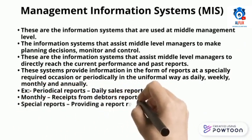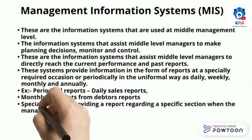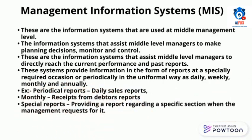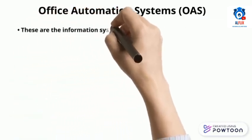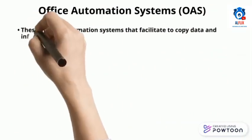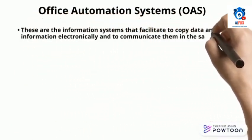Management information systems provide information in the form of reports, either at a specially required occasion or periodically in a uniform way — daily, weekly, monthly, and annually. Examples of periodical reports include a daily sales report or monthly receivables report. Special reports would be providing a report regarding a specific section upon management request.